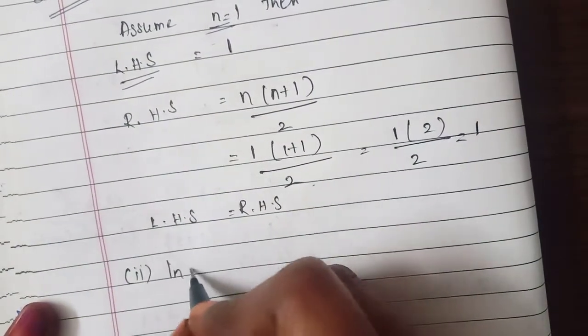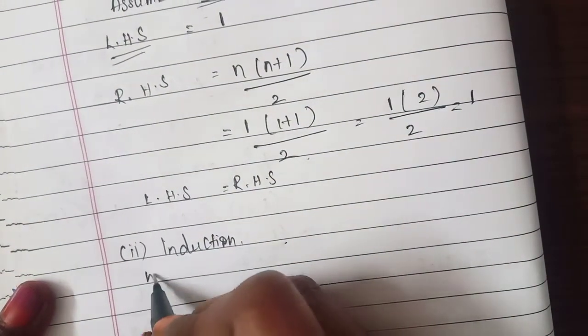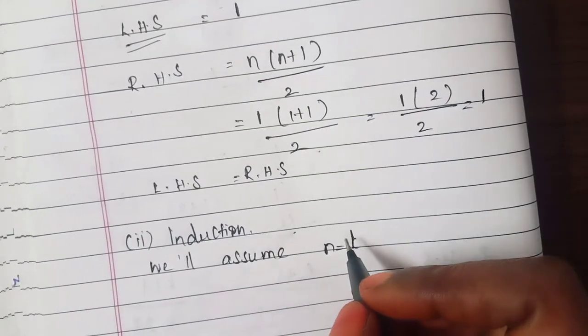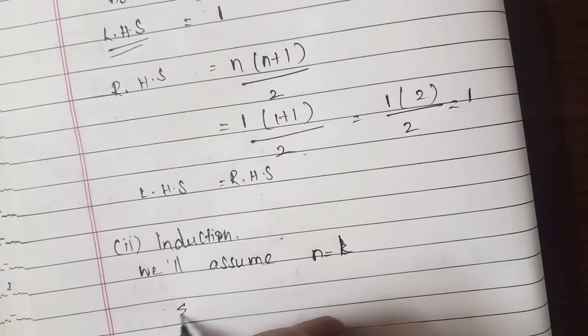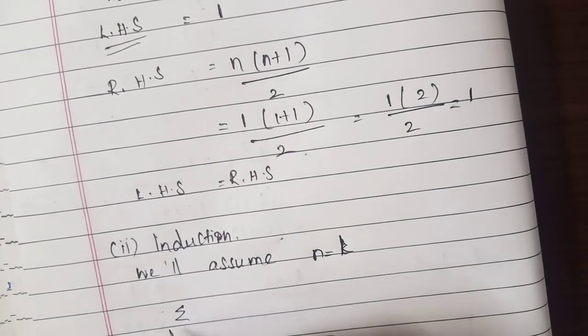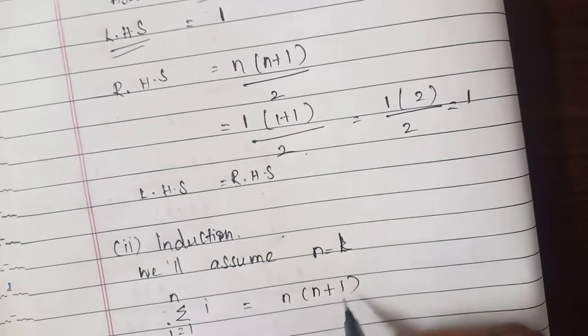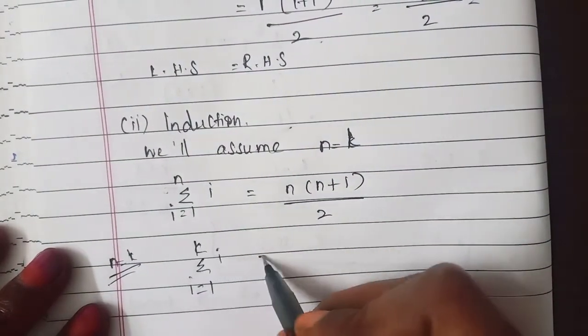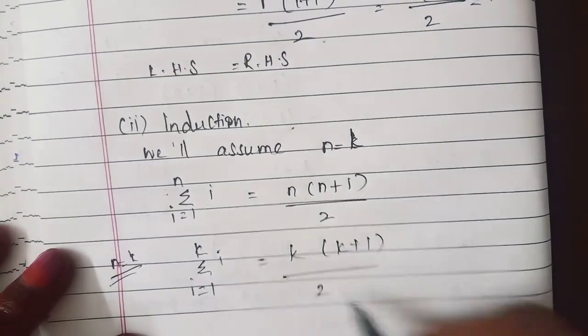Similarly for induction step we will assume n equal to k for our summation i equal to 1 to n i equal to n into n plus 1. So here we will substitute n equal to k which means summation i equal to 1 to k and instead of n we will have this like that.